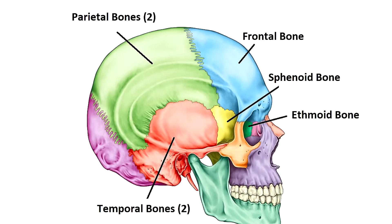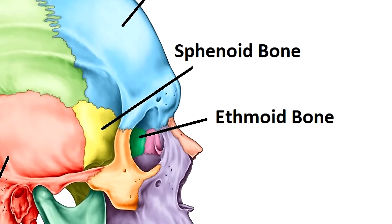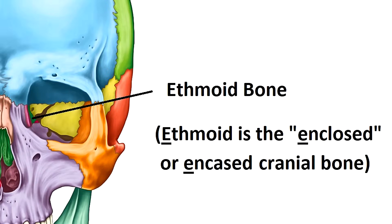Next we have the ethmoid bone, which comes from a word meaning 'strainer.' The top of this bone has cribriform plates containing tiny holes resembling a strainer. It's located inferior to the frontal bone, between the sphenoid and nasal bones. When you look at the skull from the anterior view you can just see a little part of it in the eye opening behind the nasal bones — the ethmoid is the enclosed cranial bone; you don't see very much of it.